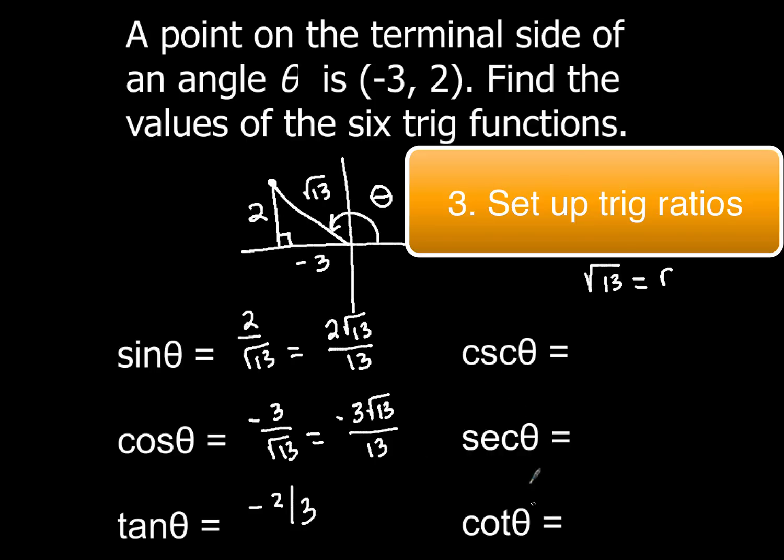Now for cosecant, secant, and cotangent, remember those are the reciprocal functions of sine, cosine, tangent. So if I know the sine was 2/√13 before we rationalized, that means the cosecant is simply going to be √13/2. The secant function is going to be √13/3, and again, that one is going to be negative. And last but not least, the cotangent function is going to be -3/2.